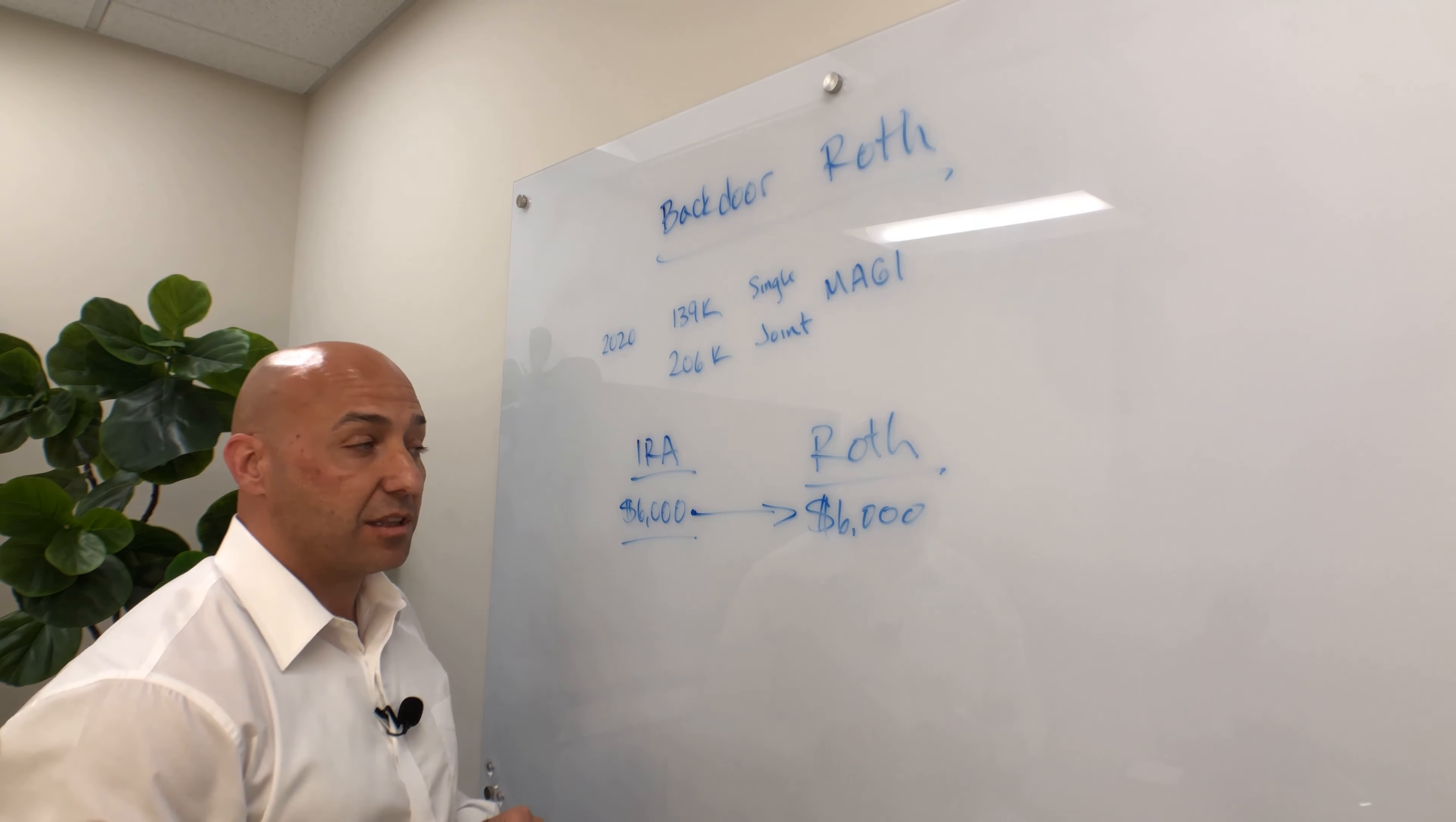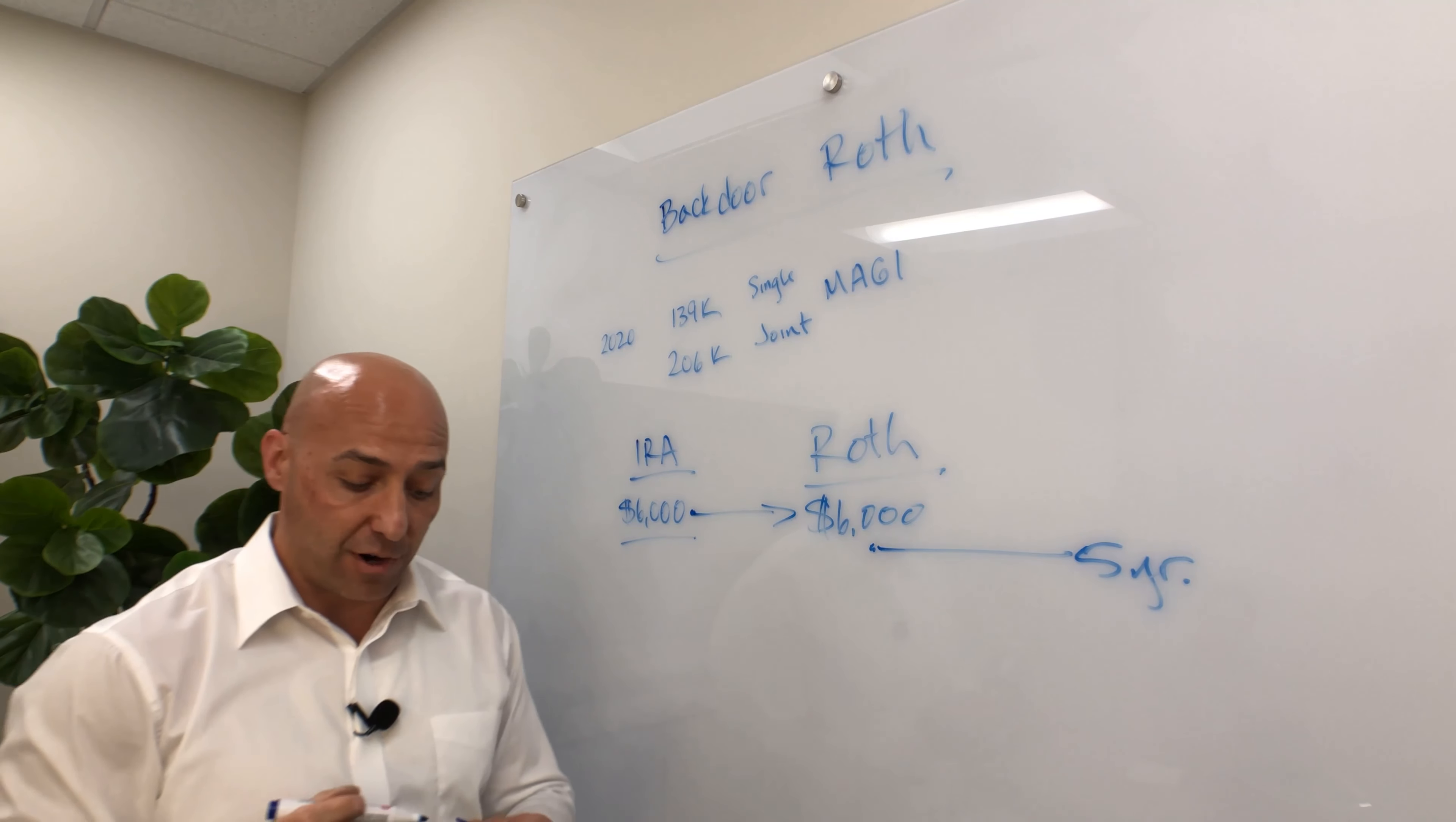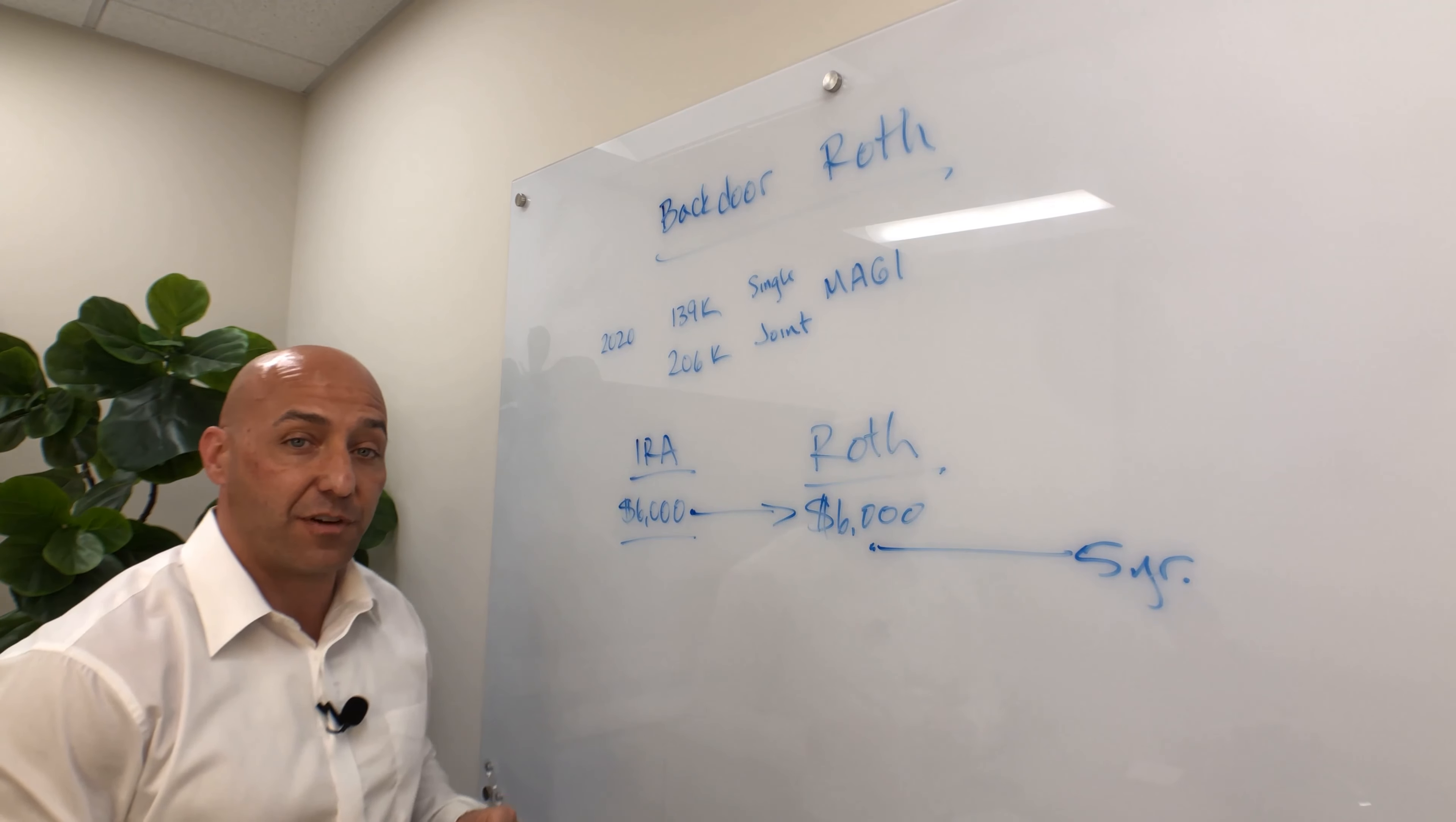Now, a couple of things I would like to remind you when you do this. Number one is Roth conversions have what's called a five-year rule, which means you cannot take this money out of your Roth IRA for five years. Otherwise, you're going to pay a 10% penalty on the distribution. So when you do these conversions, you got to leave it in there for at least five years.